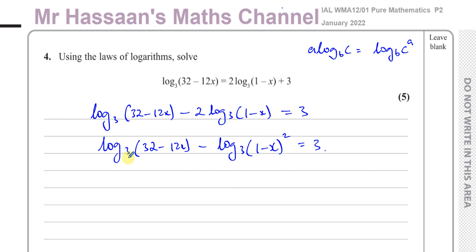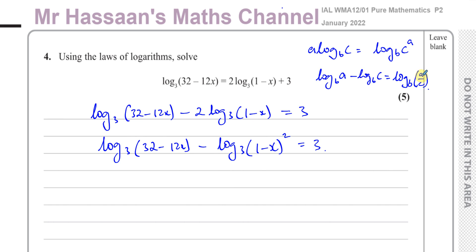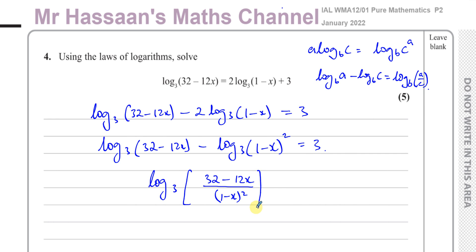Now, once I have it written in this form where the logs are to the same base and there are no multiples in front of them, I can combine them using the division law of logarithms: log base b of a minus log base b of c equals log base b of a divided by c. There's also the addition law where log base b of a plus log base b of c equals log base b of a times c. So I can rewrite this as log to the base 3 of 32 minus 12x divided by 1 minus x all squared, and that equals 3.